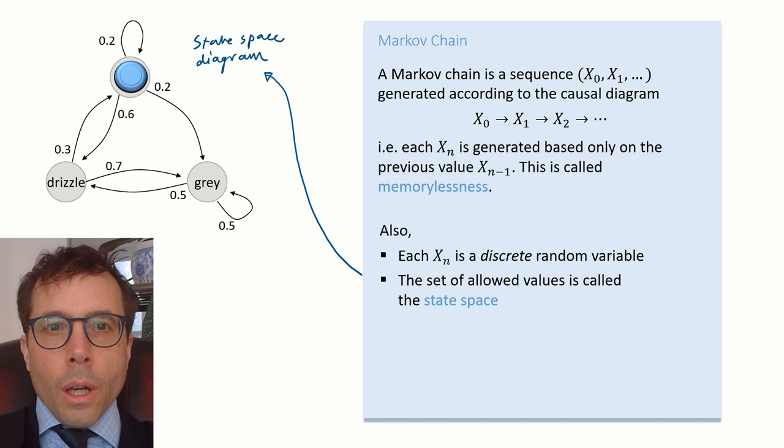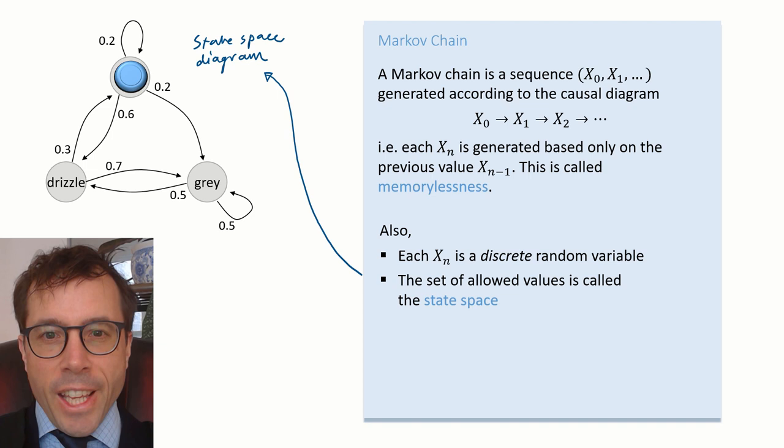Don't get muddled up between the causal diagram and the state space diagram. The causal diagram shows all the random variables and for Markov chains, it's always this simple straight line. The state space diagram shows all the states and the transitions between them. In other words, the state space diagram is telling us the probability model behind each edge of the causal diagram.